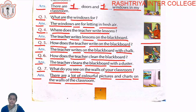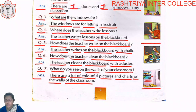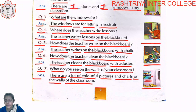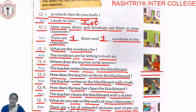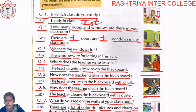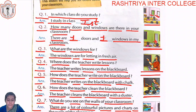There are colorful pictures and charts on the walls of the classroom. You can see in the picture — there is a scenery pasted on the classroom wall. In another picture, a teacher is shown writing on the blackboard. The classroom has one window and one door. You can see the window and the blackboard in the picture.